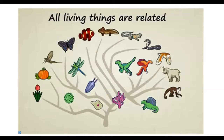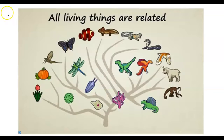DNA, embryology, anatomy, and the fossil record are four really strong pieces of evidence showing how things have changed and how the gene pool has changed over time. Let's look at a claim: all living things are related, like one big family tree. Let's talk about how we can prove that, and watch how we do.